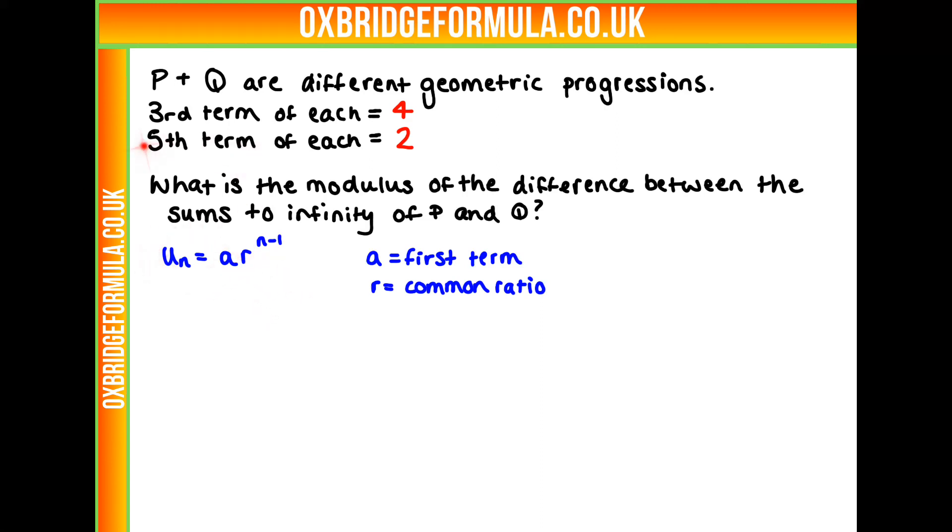We can write this out using the information we have here. Our third term in both is 4, so 4 equals ar squared. And our fifth term is 2, so that's 2 equals a times r to the power of 4.